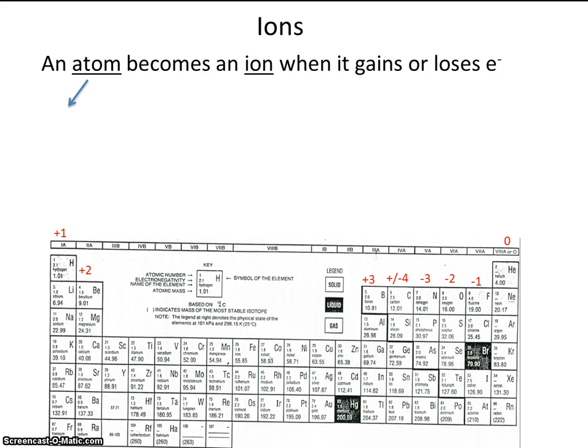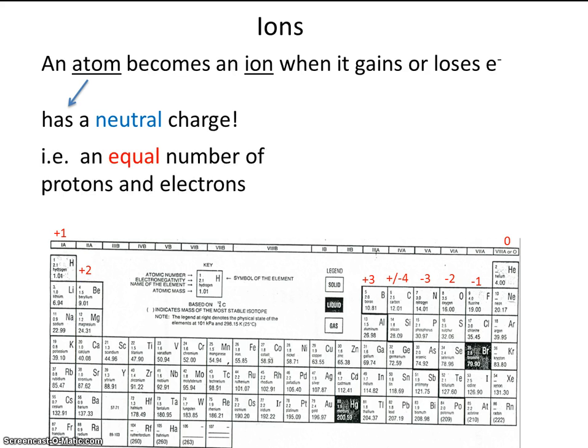So let's look at the difference between an atom and an ion. An atom has a neutral charge. Well how does one of these elements have a neutral charge? The way it has a neutral charge is by having the same number of positives and negatives. So an atom has an equal number of protons and electrons.